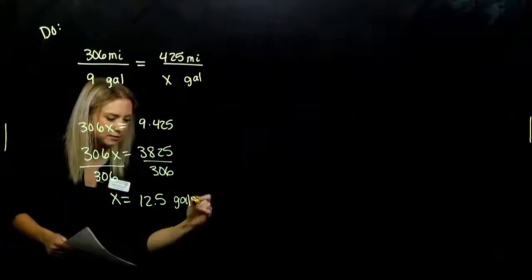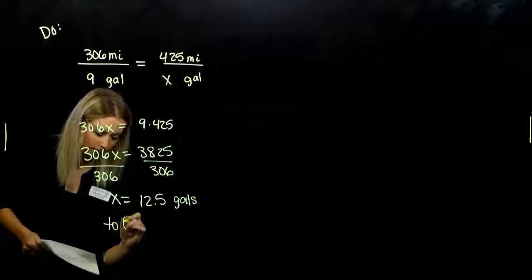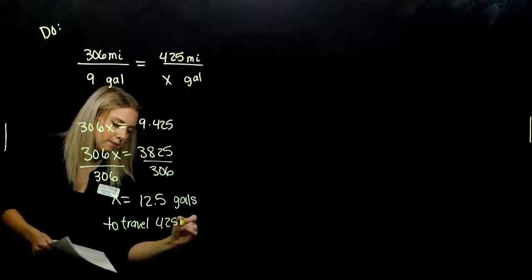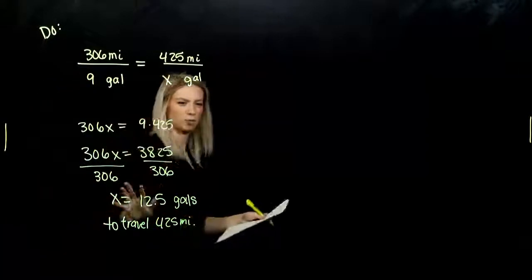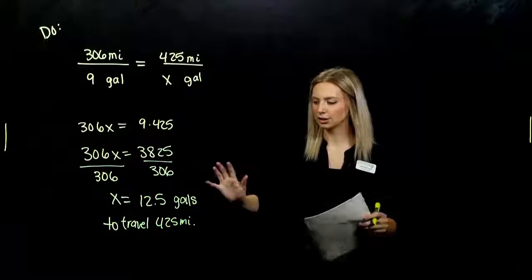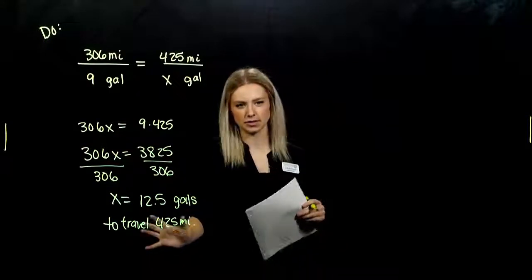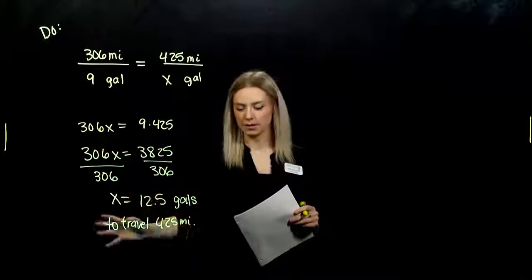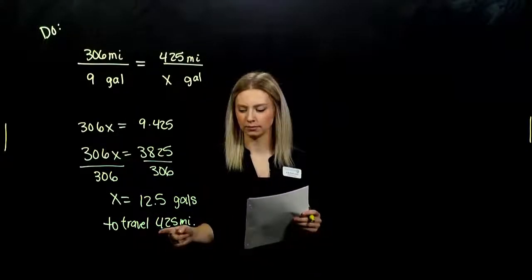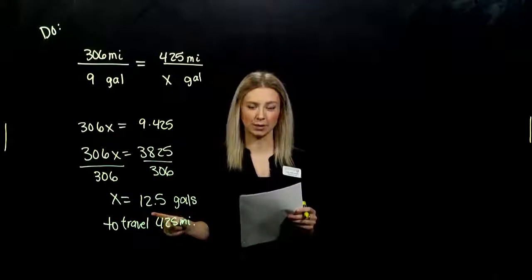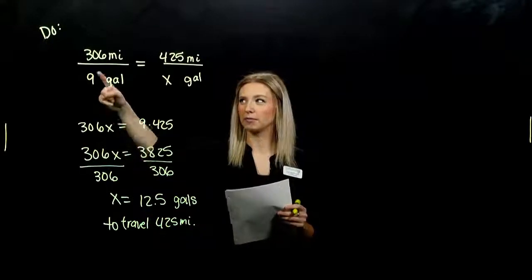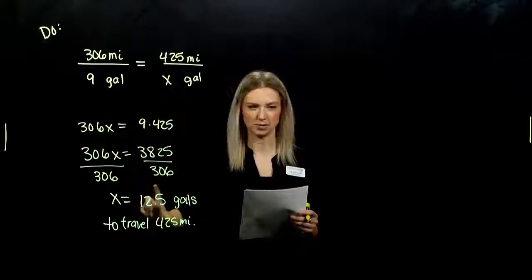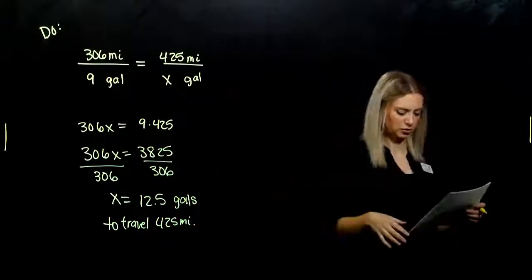So on X, what are my units here? I solved for the number of gallons that it would take to travel 425 miles on the highway. I need 12.5 gallons to travel 425 miles. It's important with these proportion problems to actually specify the distance we're traveling or our other unit, because based on how far we're going, we need a certain amount of gas. If I'm not going as far, I don't need as many gallons. If I'm going farther, I need more. We need to be able to specify which ones are attached to which.